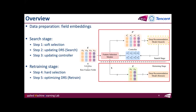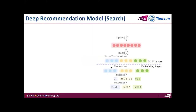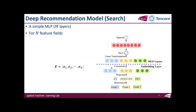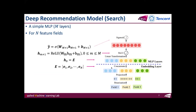I will first introduce the structure of the recommendation model for the search stage. This is the architecture of the deep recommendation model used in the search stage. We use a single M-layer multi-layer perceptron for recommendation. With embedding inputs, this recommendation model makes predictions by M times linear transformation together with non-linear activation. We set all activation functions as ReLU in AutoField.